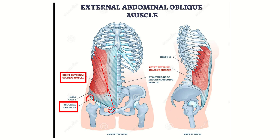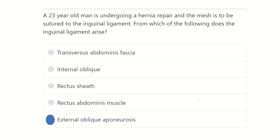In the second picture, the inguinal ligament starts from the anterior superior iliac spine and inserts into the pubic tubercle. It is a continuation of the external oblique muscle. It is now clear that the external oblique aponeurosis gives rise to the inguinal ligament.